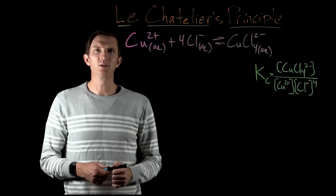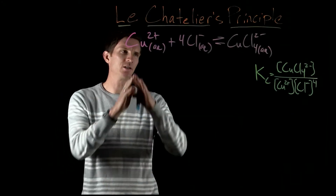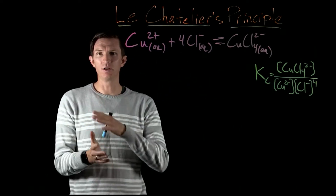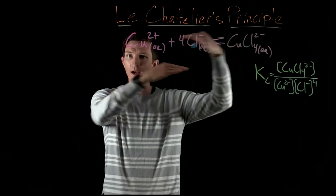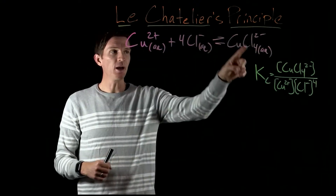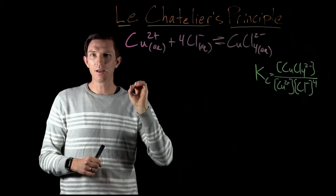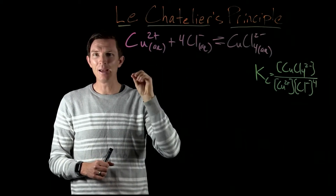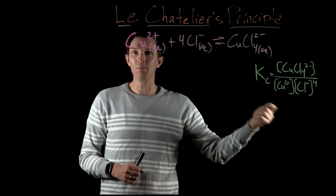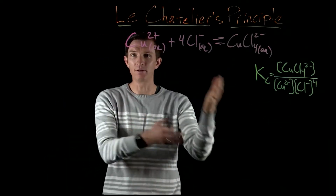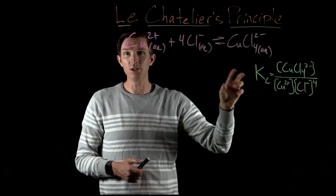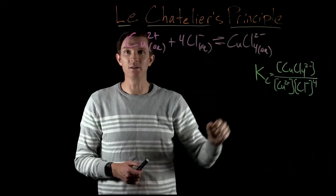In this video we're going to look at Le Chatelier's principle. Le Chatelier's principle takes a reaction at equilibrium — meaning constant concentrations and equal reaction rates — and considers what happens when some outside disturbance is input into this reaction to cause it to not be at equilibrium anymore. The reaction will respond in a way to bring it back to equilibrium, back to a consistent ratio between the reactants and products.